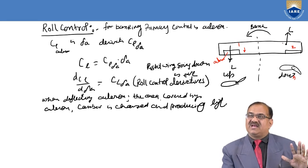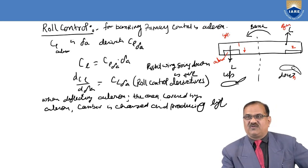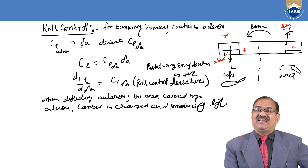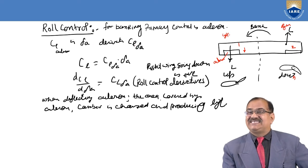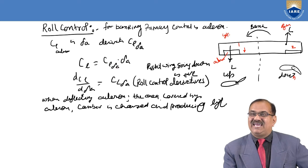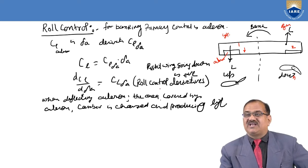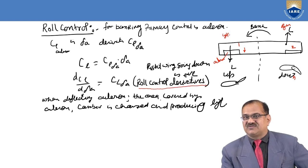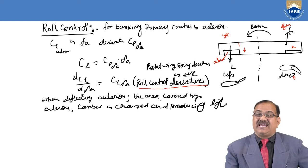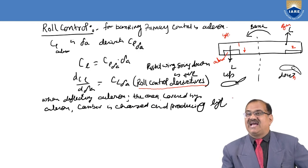Here, the derivative when you apply delta A is called CL delta A, where CL is the coefficient of rolling moment — not the coefficient of lift. So CL is equal to CL delta A into delta A. Therefore dCL by d(delta A) is equal to CL delta A — this is called the rolling control derivative. Whenever deflecting the aileron, the camber of the area covered by the aileron is changed, producing a lift L. This lift L will make rolling control possible. Ailerons are the primary control for roll or lateral motion.